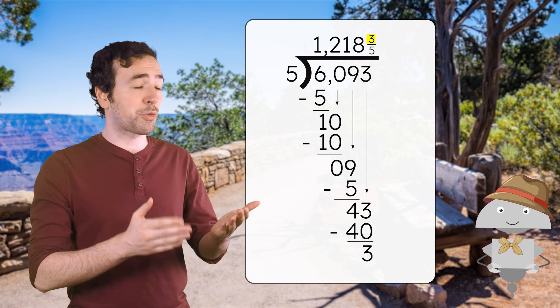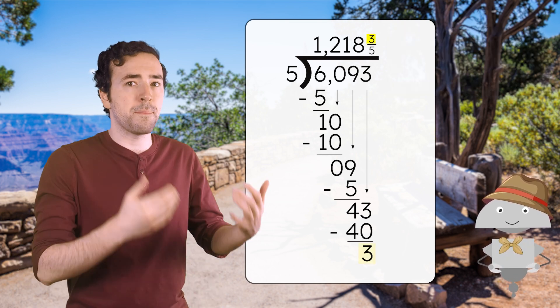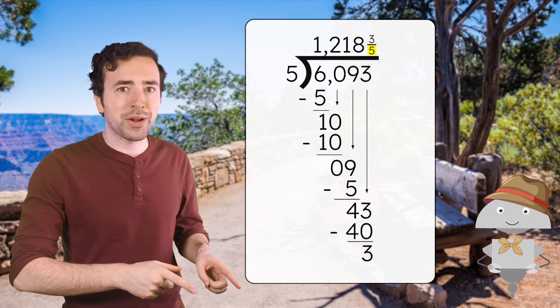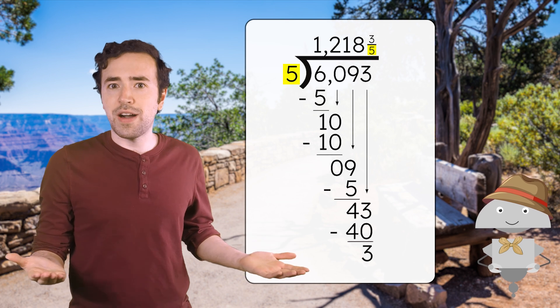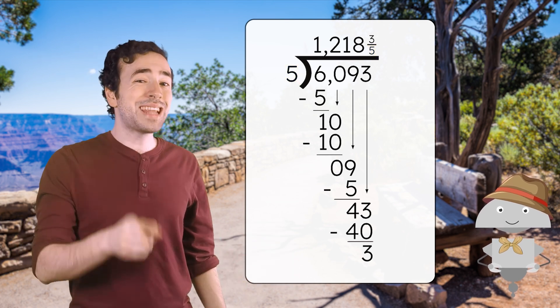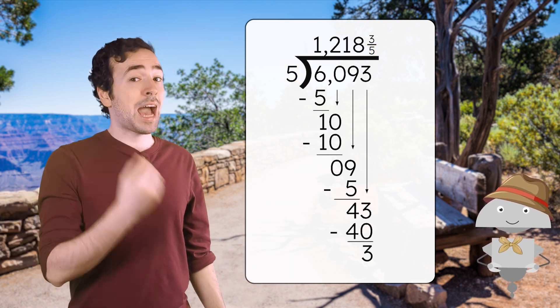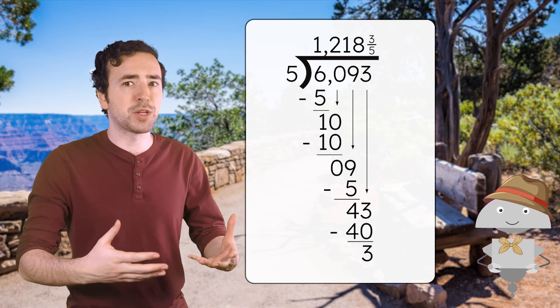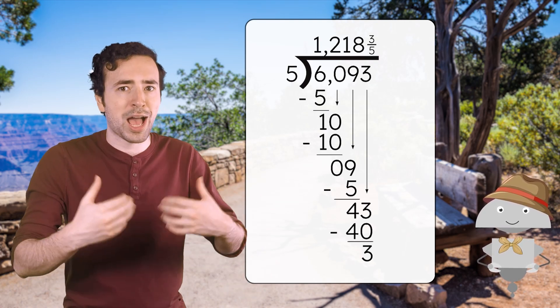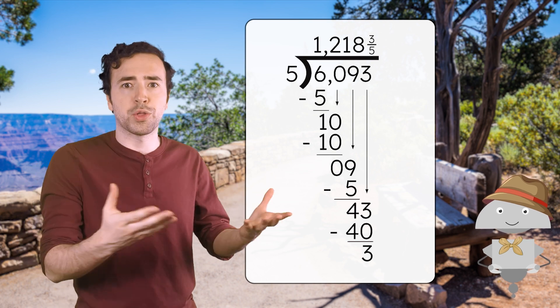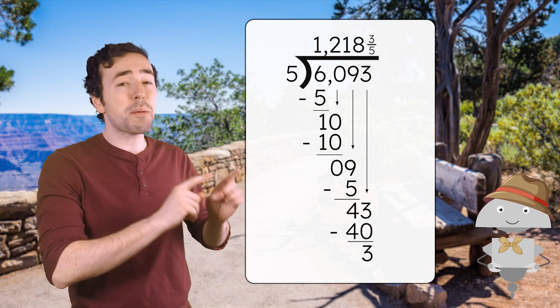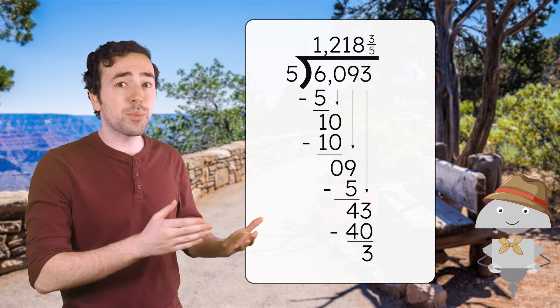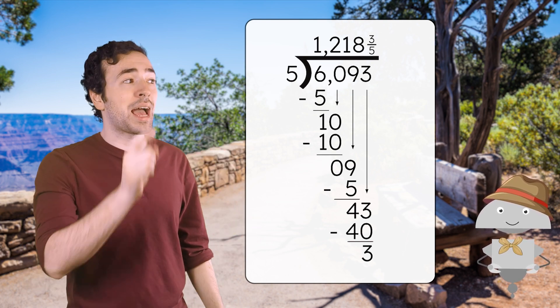The numerator of three fifths is the same as the remainder three, or the leftover amount we're working with. And the denominator is the same as the divisor, five. That's because the denominator of a fraction tells us how many pieces a whole is split into. And the divisor of a division problem also tells us how many groups or pieces to split the whole into. So remainders can be represented as fractions by using the remainder as the numerator and the divisor as the denominator.